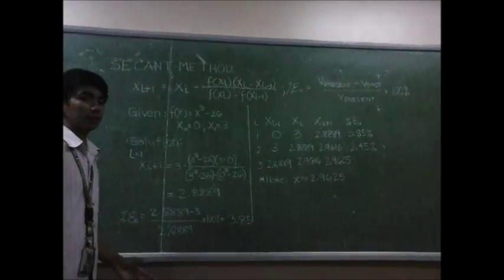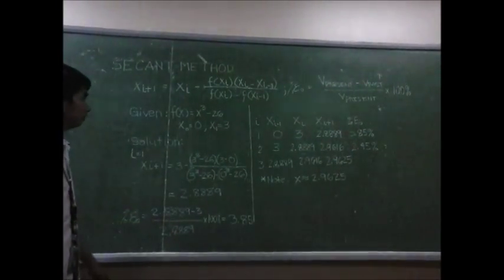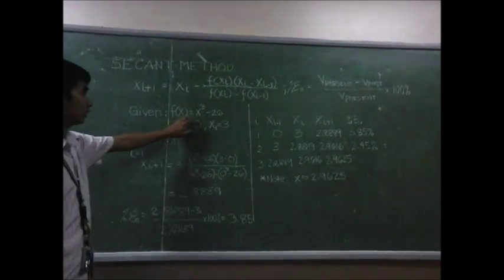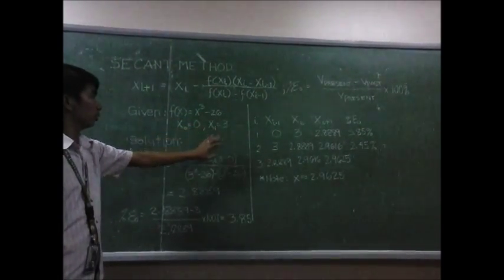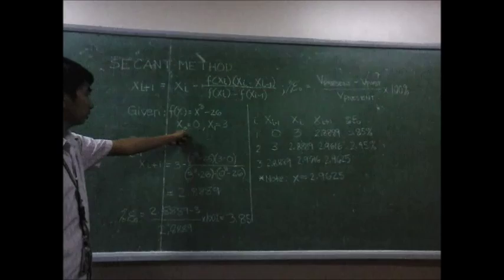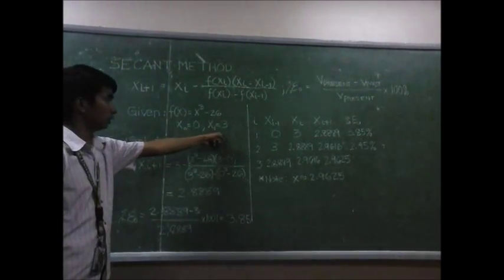For our example using the secant method, given the function f(x) = x³ - 26, with initial values x₀ = 0 and x₁ = 3.